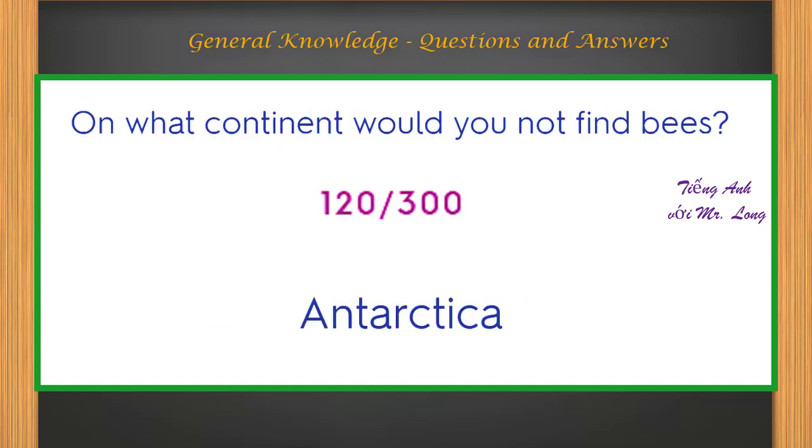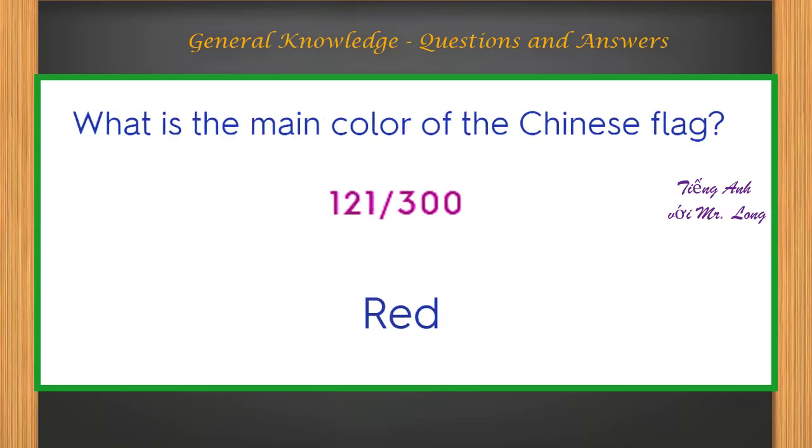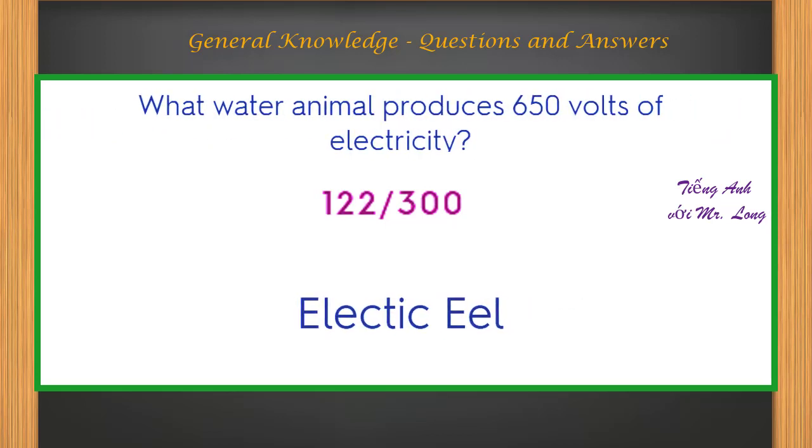On what continent would you not find bees? Antarctica. What is the main color of the Chinese flag? Red. What water animal produces 650 volts of electricity? Electric eel.